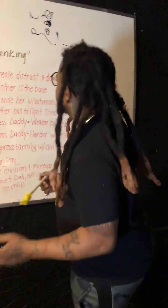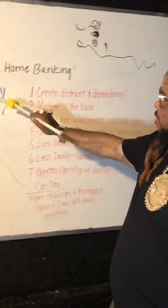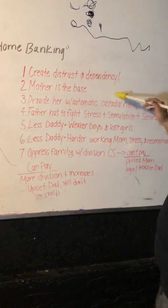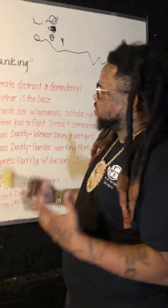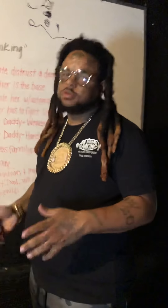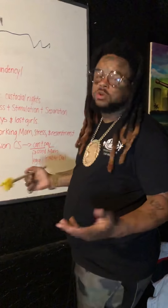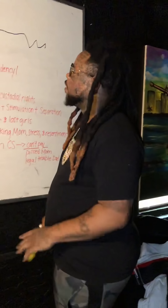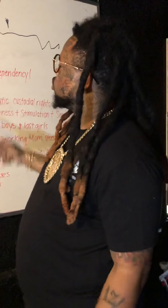Today I'm gonna explain how the system can destroy a family in less than three minutes. Number one: what's the best way to destroy a family before it's actually built? Create distrust and dependency. If you look at the system in terms of custodial rights between parents, mothers typically get the custodial rights out the gate. You set up a system that gives the mother the bulk of the rights whether the father is a great one or not.